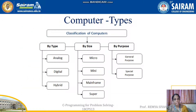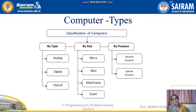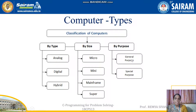The next topic is computer types. Computers can be classified based on different characteristics: type, size, and purpose. Based on purpose, there are two types: general purpose computers and special purpose computers. General purpose computers are the everyday computers we use, while special purpose computers — such as those used by NASA — are designed for a specific task only.